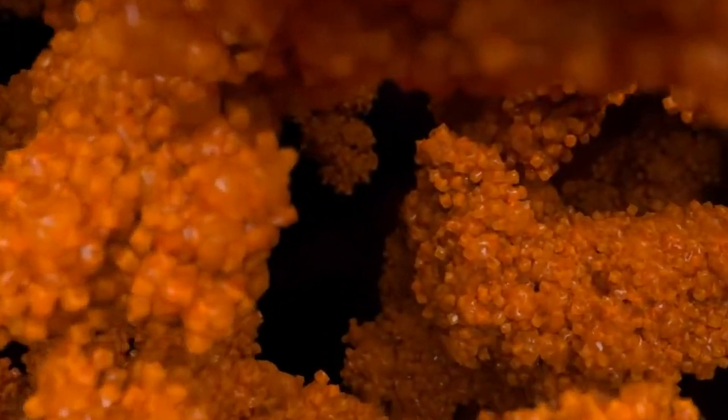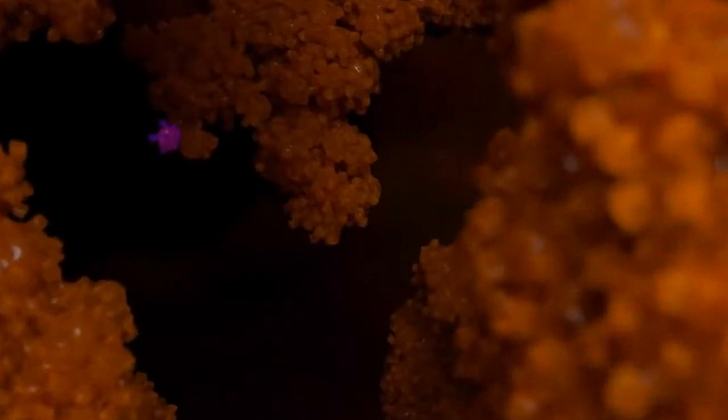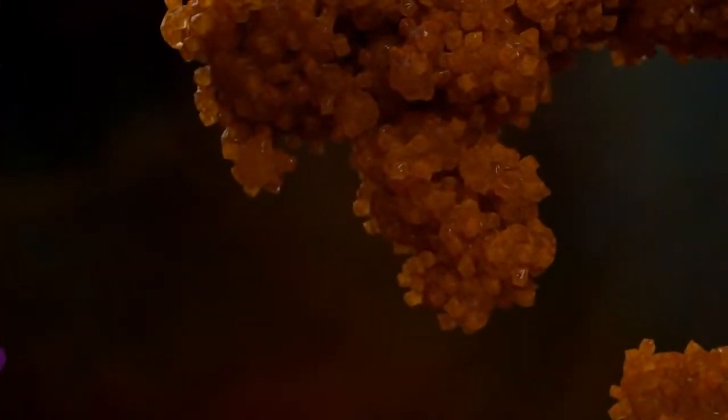We also find alpha-amylase, which we had already found in the mouth. It now does the rest regarding the splitting of carbohydrates, which it converts into maltose and isomaltose.